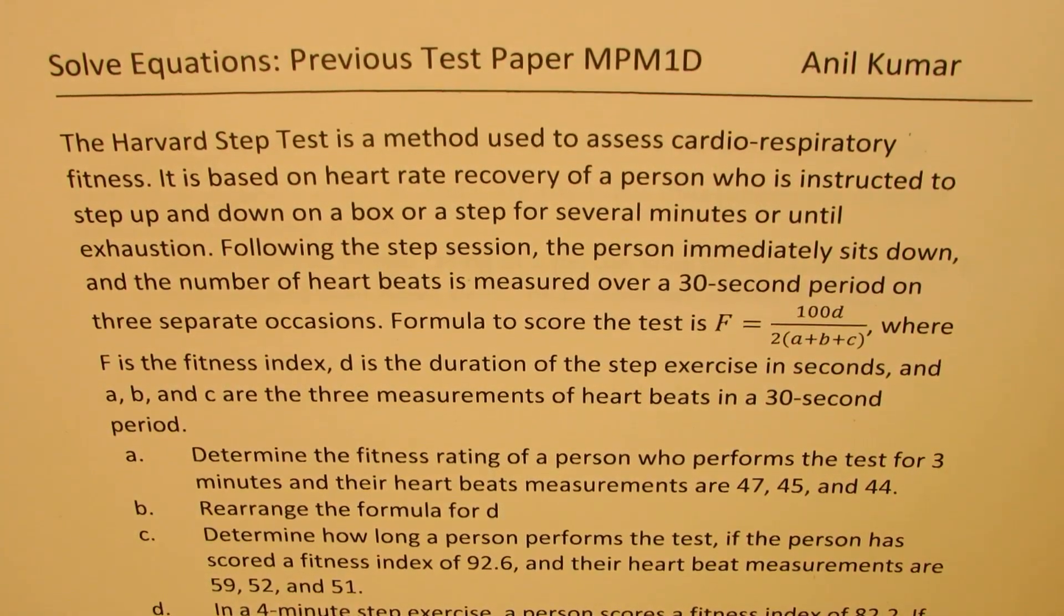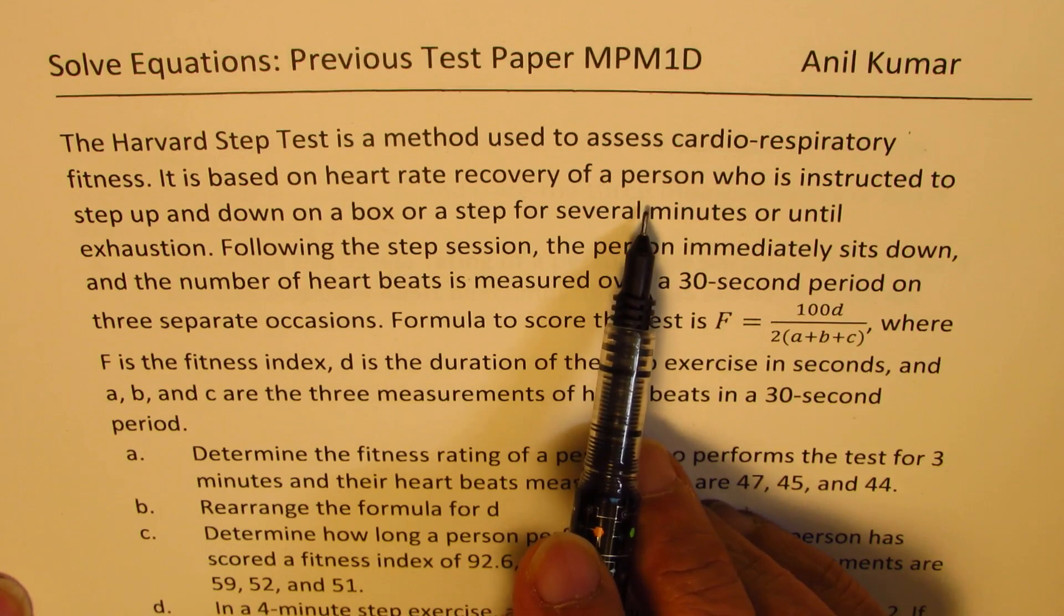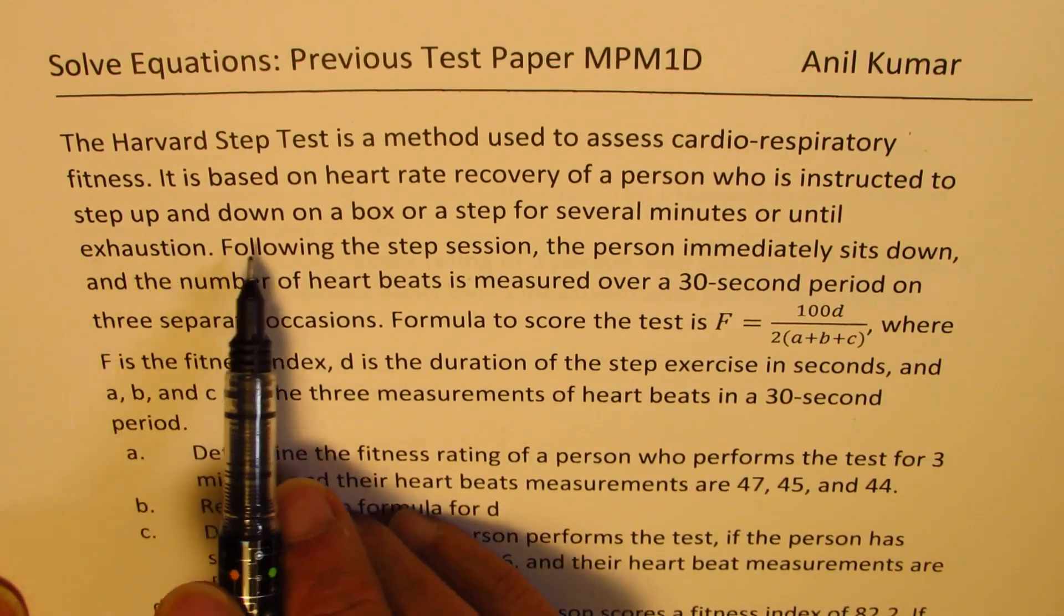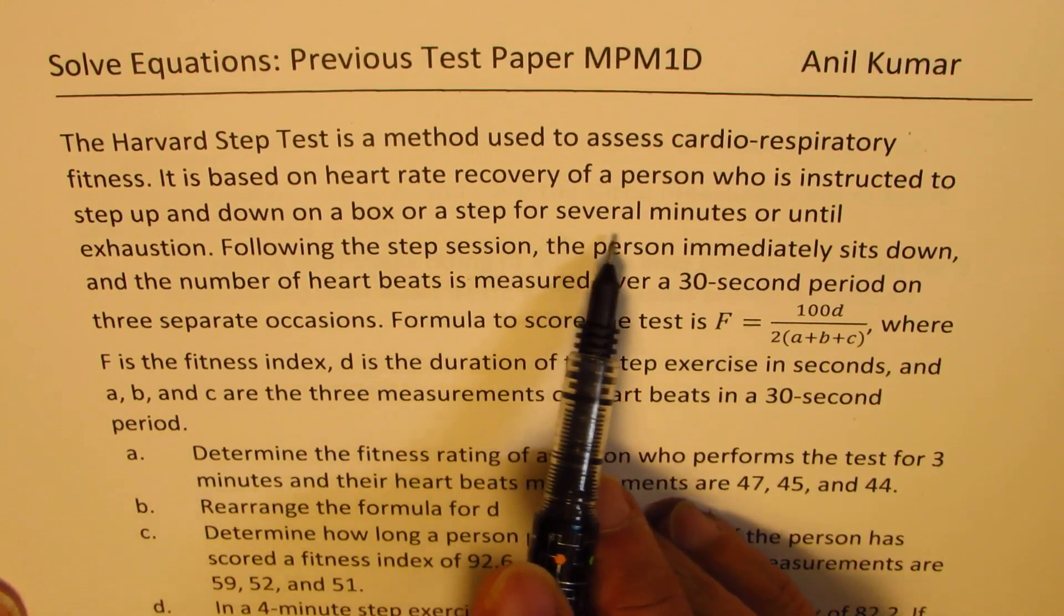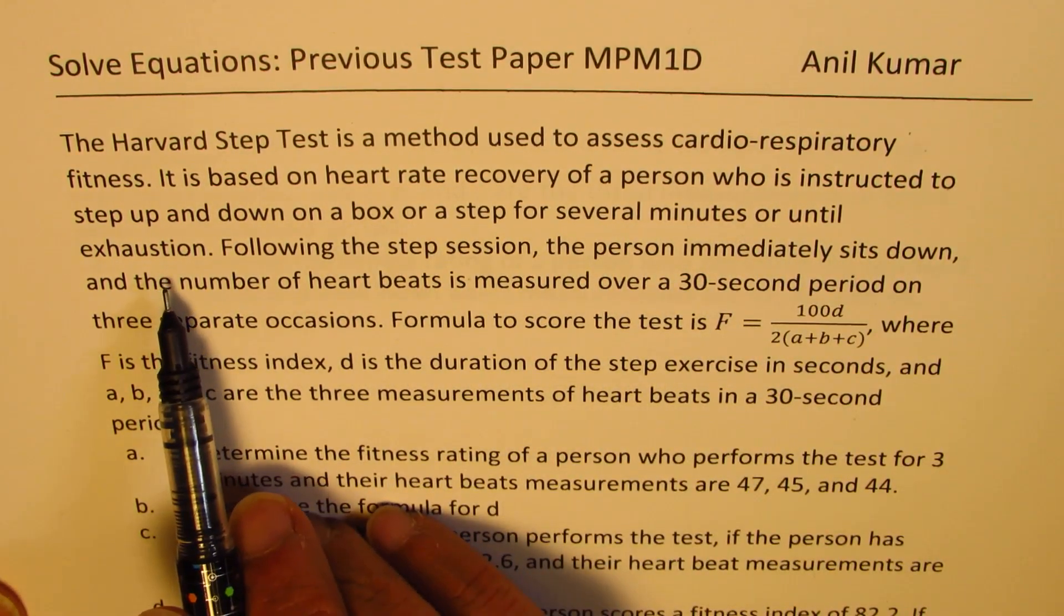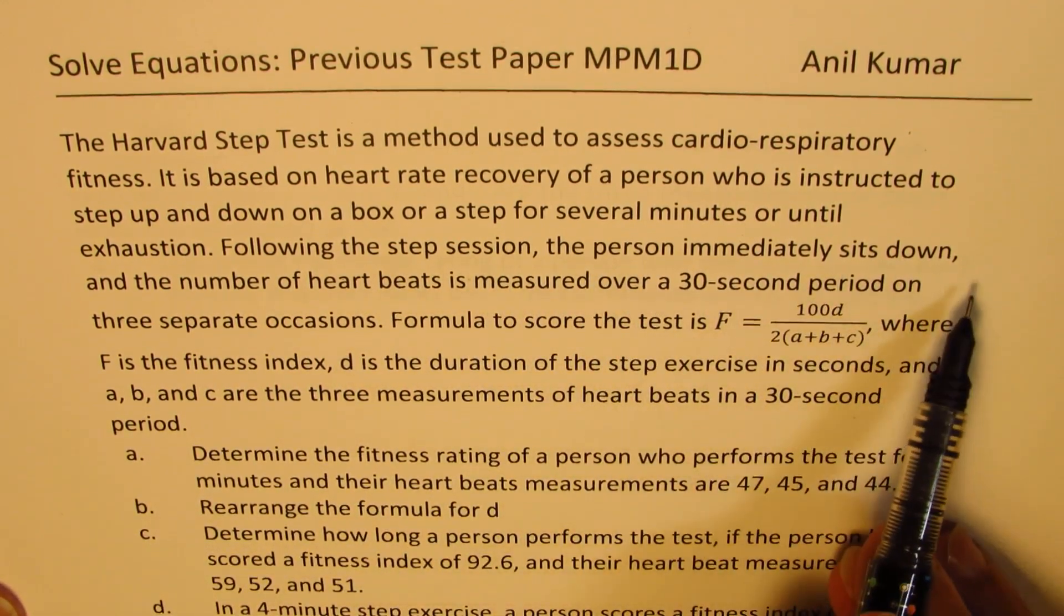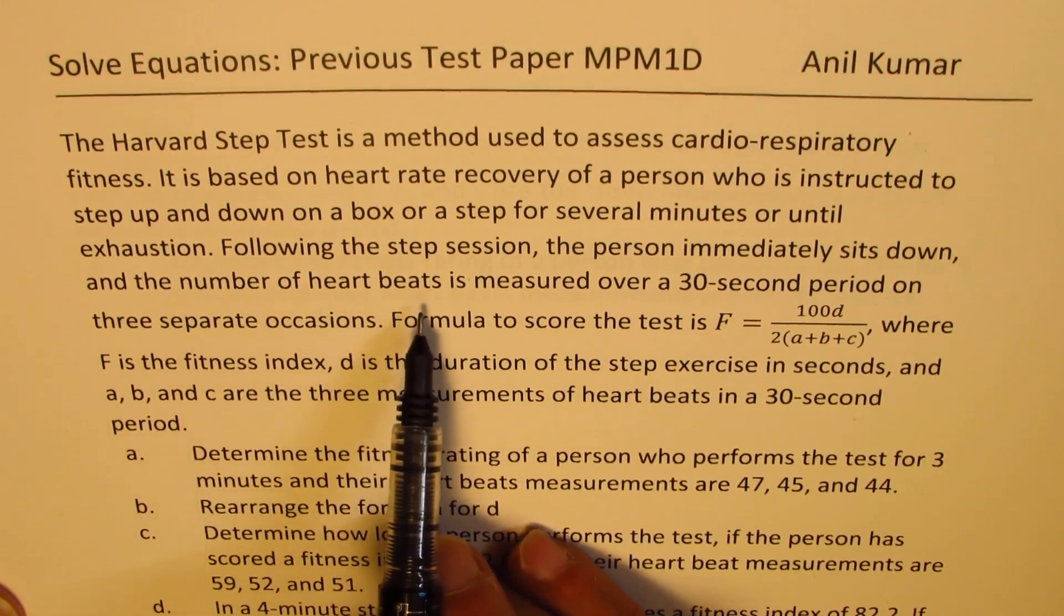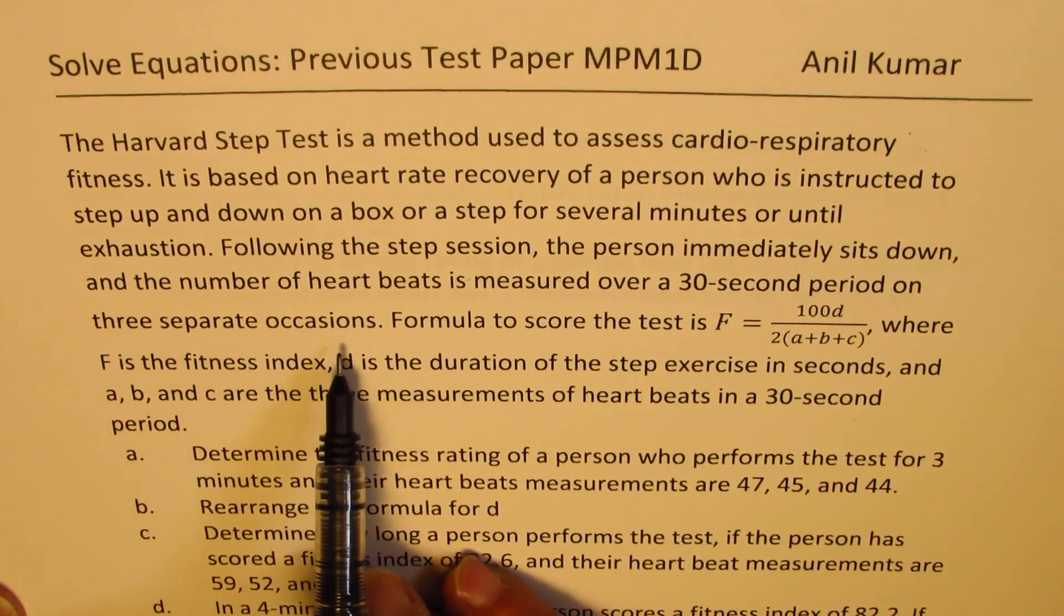The Harvard Step Test is a method used to assess cardiorespiratory fitness. It is based on heart rate recovery of a person who is instructed to step up and down on a box or a step for several minutes or until exhaustion. Following the step session, the person immediately sits down and the number of heartbeats is measured over a 30 second period on three separate occasions.